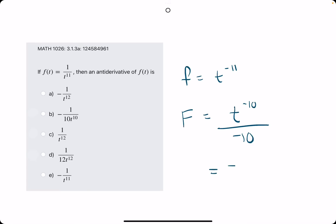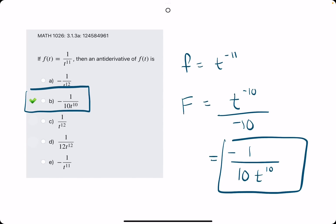Rewriting this, we bring the negative from the bottom out in front. We put t to the positive 10 on the bottom, leave a 10 out in front. And this is what we're looking for. That looks like option B. So, let's break out the eraser to see that B is our answer.